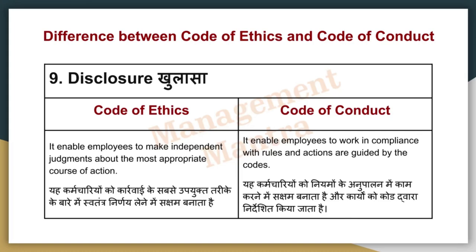The Code of Ethics enables employees to make independent judgments about the most appropriate course of action. It tells employees what the right things and actions are. The Code of Conduct enables employees to work in compliance with specific rules and actions, guiding them in what direction they can act.